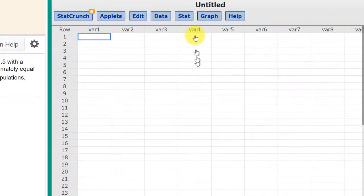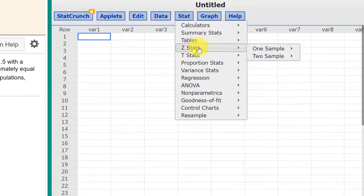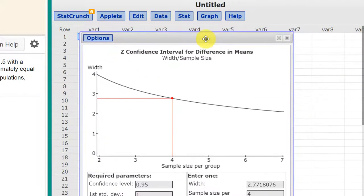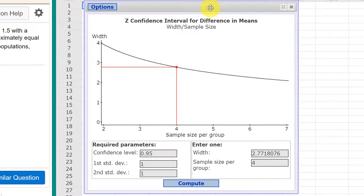Okay, I have StatCrunch open. We need to go to Stat, Z Stats, two sample, and we look down for width sample size. So we bring that up and we need to put our parameters in.